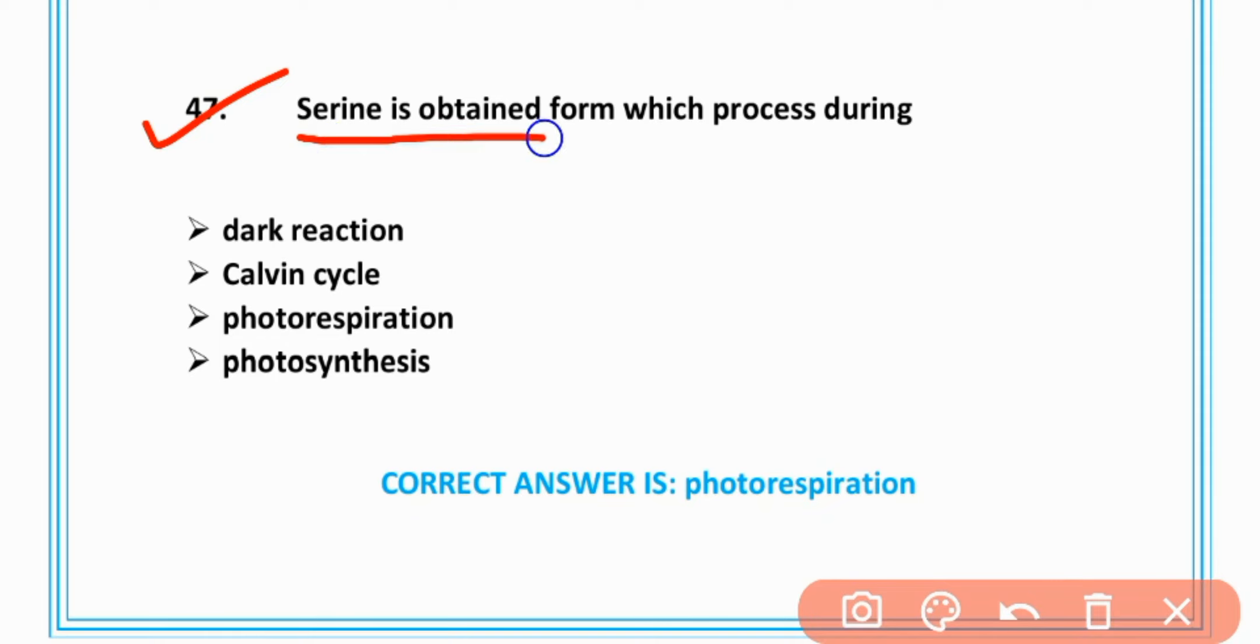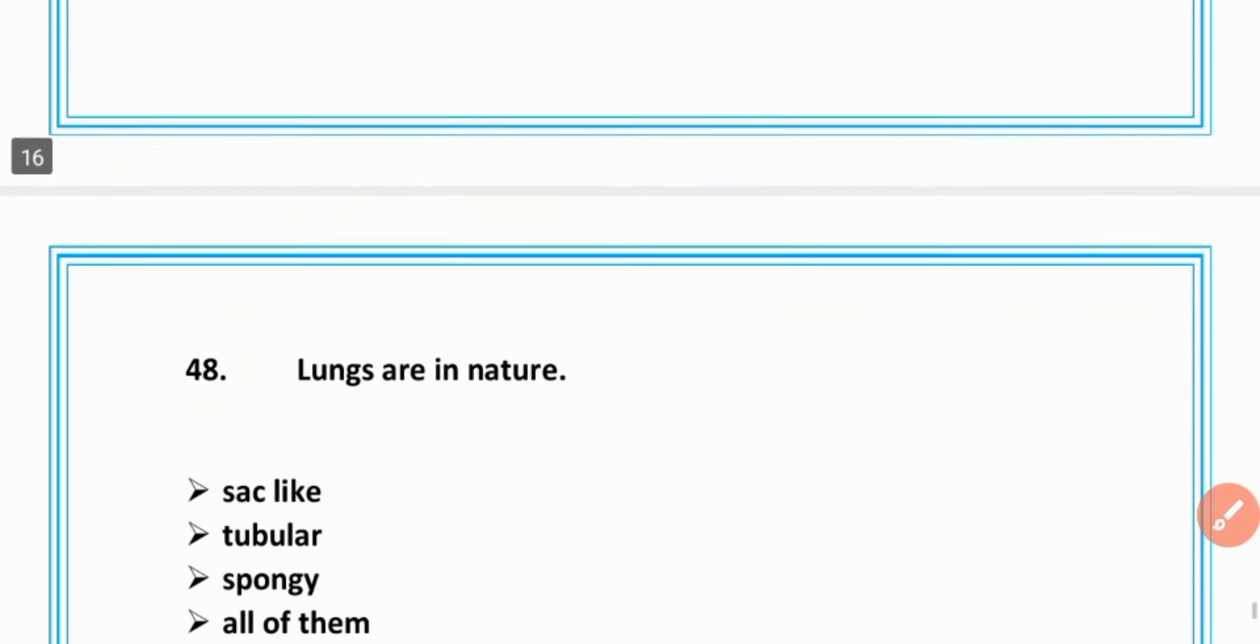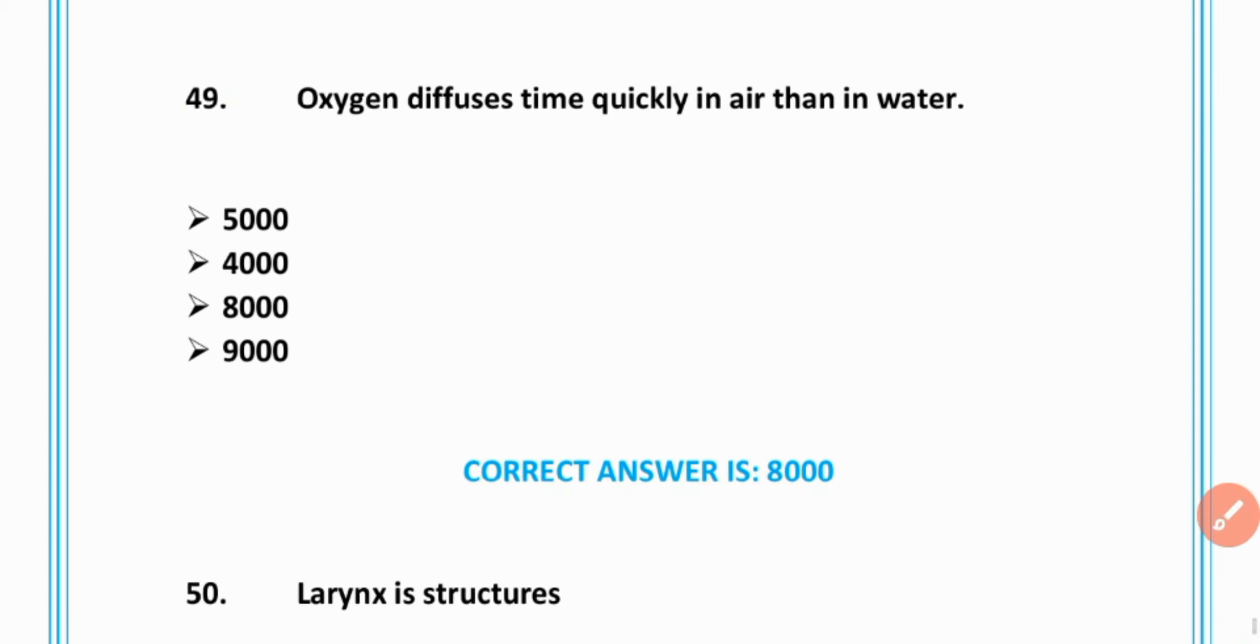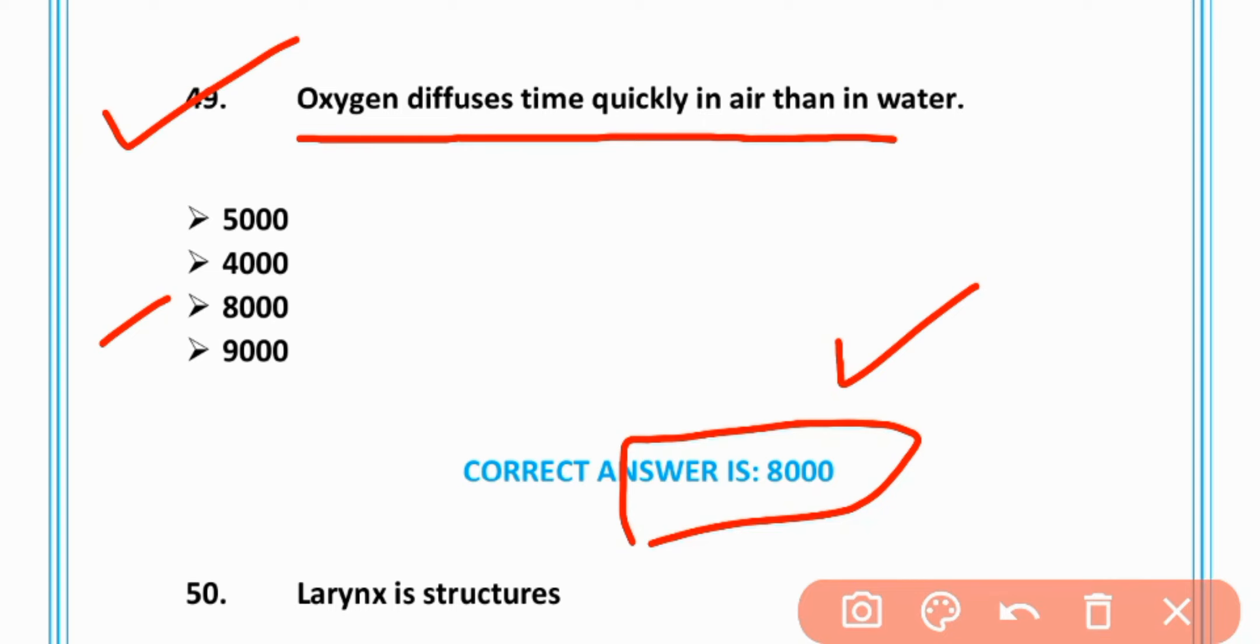MCQ number 47: Serine is obtained from which process during photorespiration? MCQ number 48: Lungs are spongy in nature, option C is correct. MCQ number 49: Oxygen diffuses 8000 times more quickly in air than in water, C is correct.